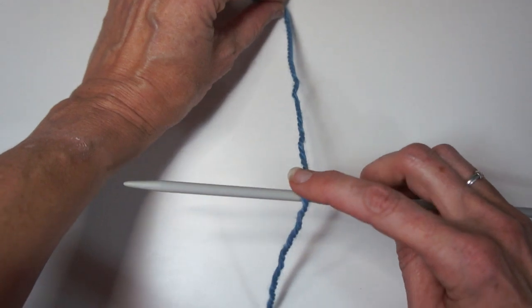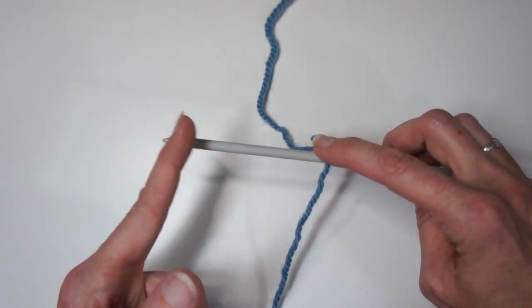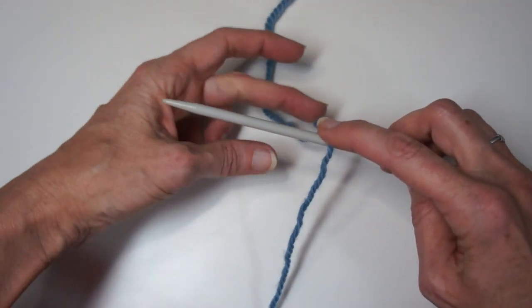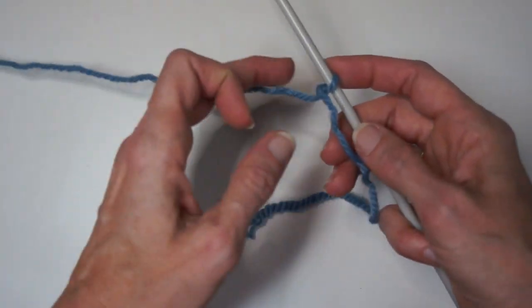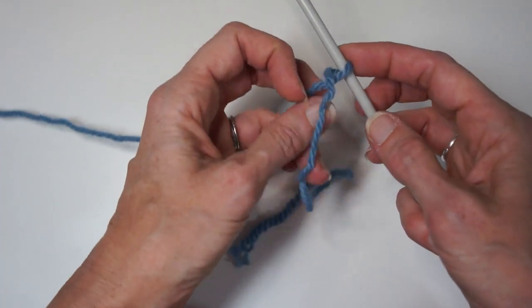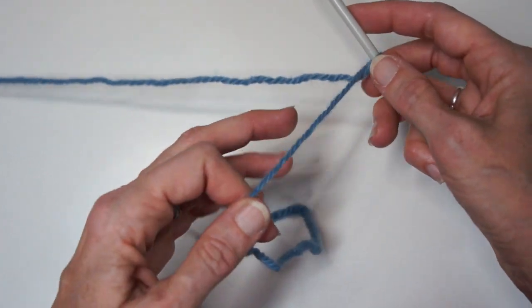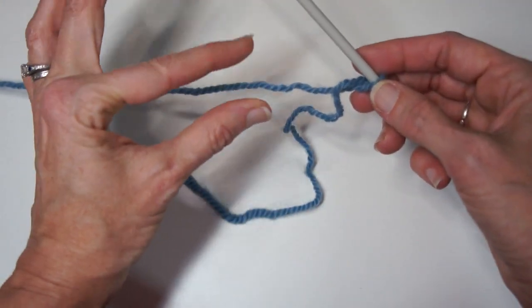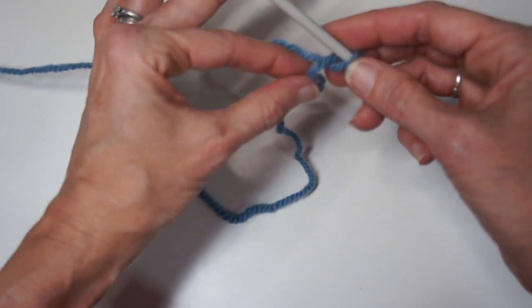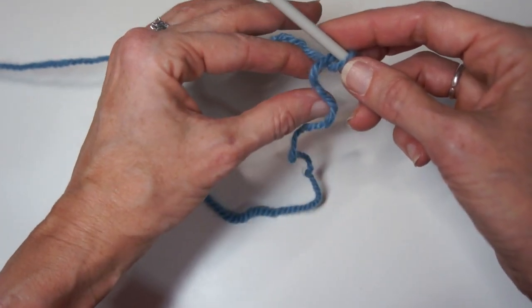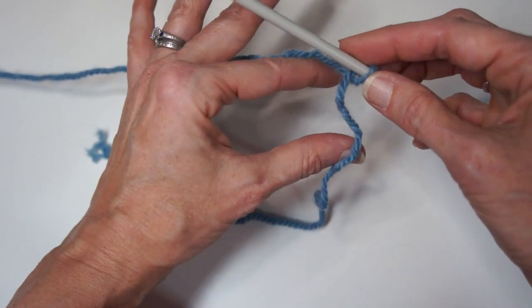Start with the tail draped over your needle with the needle pointing to the left. Bring the tail across the front of the working yarn, no need for a slip knot, and take your thumb and finger monster and dive them between the two pieces of yarn with the tail going over your thumb.